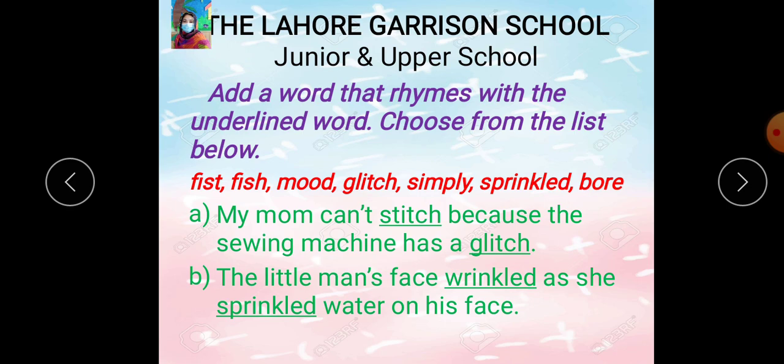Part A: My mom can't stitch because the sewing machine has a glitch. Meri mamma kapre nahin si sakti kyunke the sewing machine, salai machine, has a glitch. Glitch means a small problem — usme ek choti si problem hai. The underlined word is 'stitch' and its rhyming word from the list is 'glitch.'